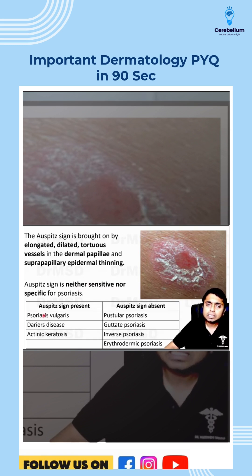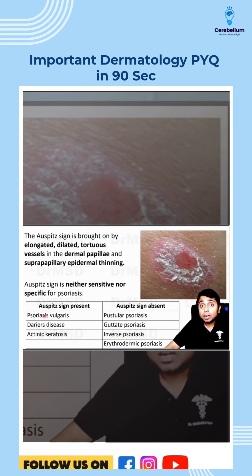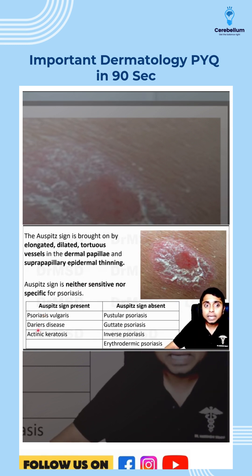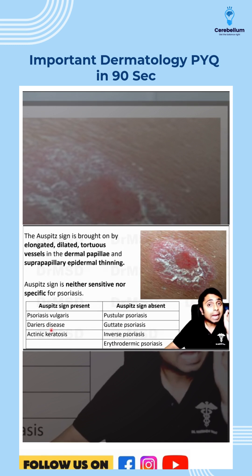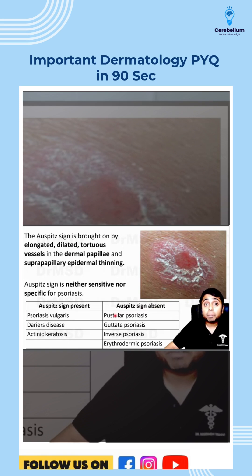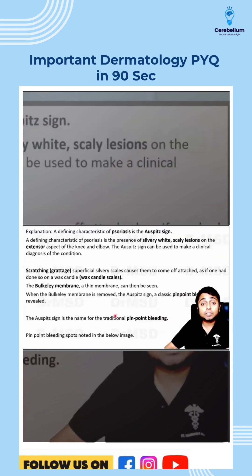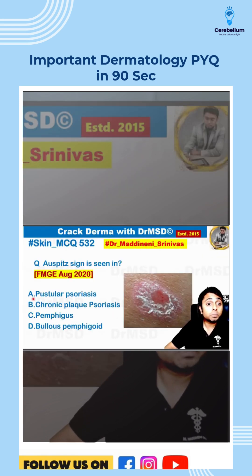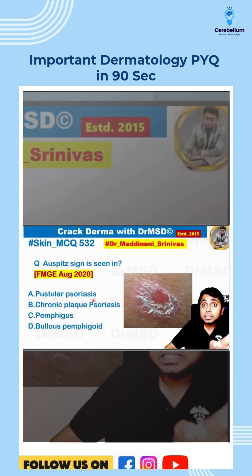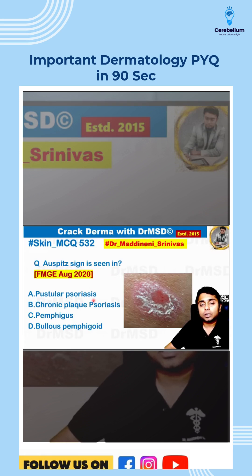Auspitz sign can be seen in other conditions apart from psoriasis vulgaris — for example, Darier's disease and actinic keratosis. It can also be absent in some types of psoriasis, such as pustular psoriasis, which was given in option A, where Auspitz sign is not seen.